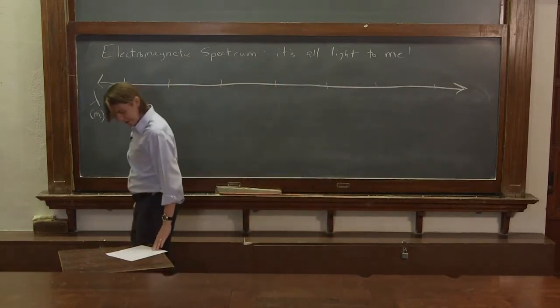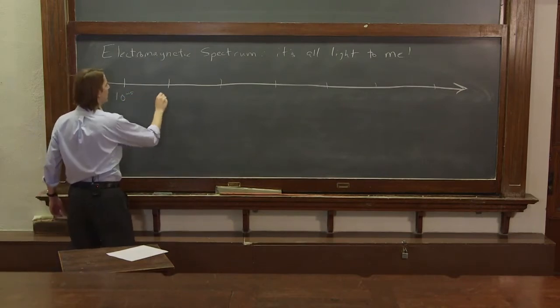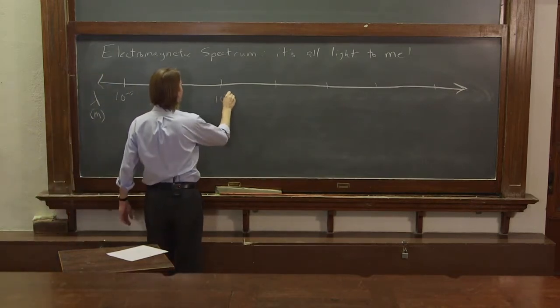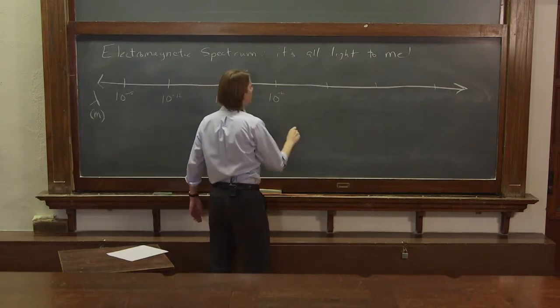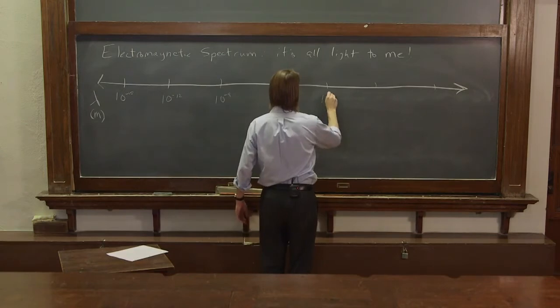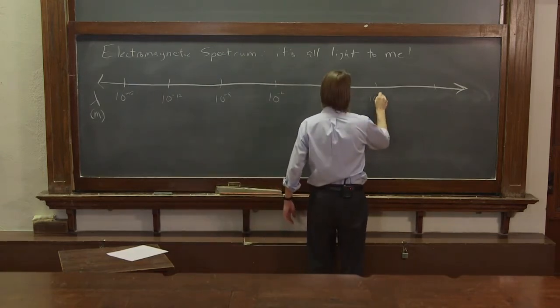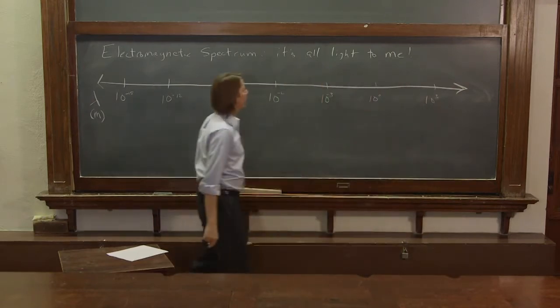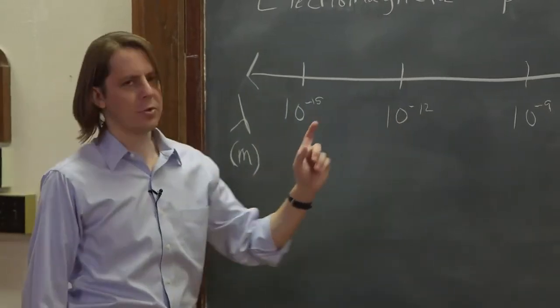And we'll start at 10 to the minus 15 and 10 to the minus 12. And I'm not going to make the world's most beautiful spectrum because this is printed everywhere on every object. You could find posters and t-shirts and everything.